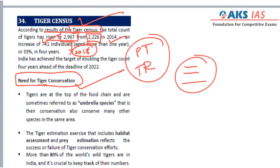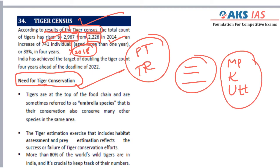From the prelims perspective, we have to remember which state has the highest number of tigers. In the present report, Madhya Pradesh has the highest number of tigers, followed by Karnataka, followed by Uttarakhand. We need to remember this sequence. Conservation efforts and the importance of tiger conservation must also be remembered, along with Project Tiger and the different tiger reserves in India.